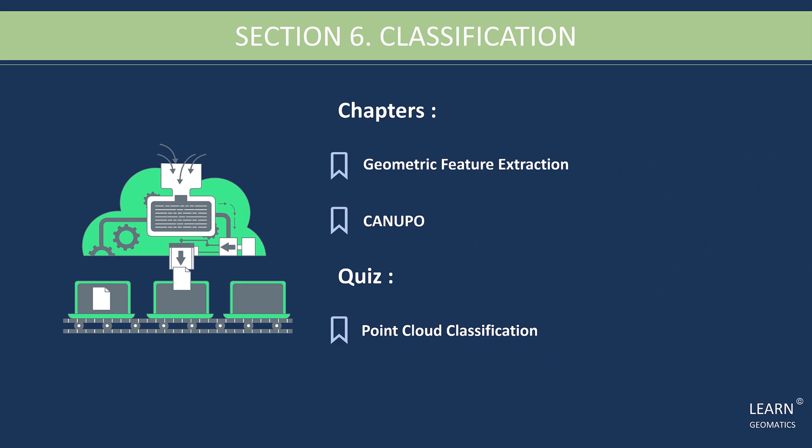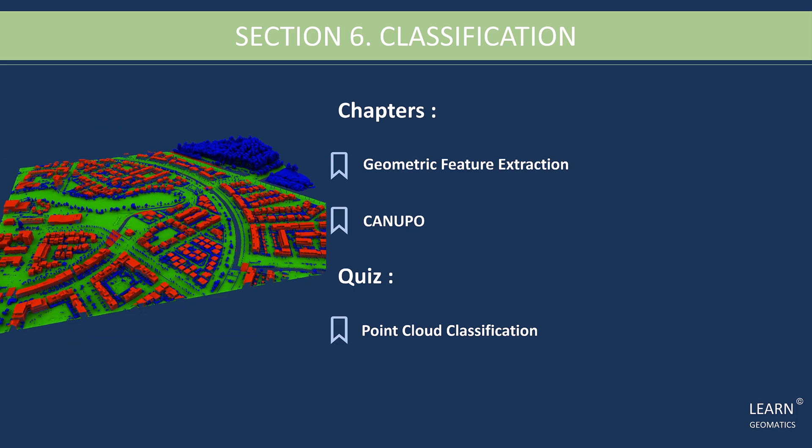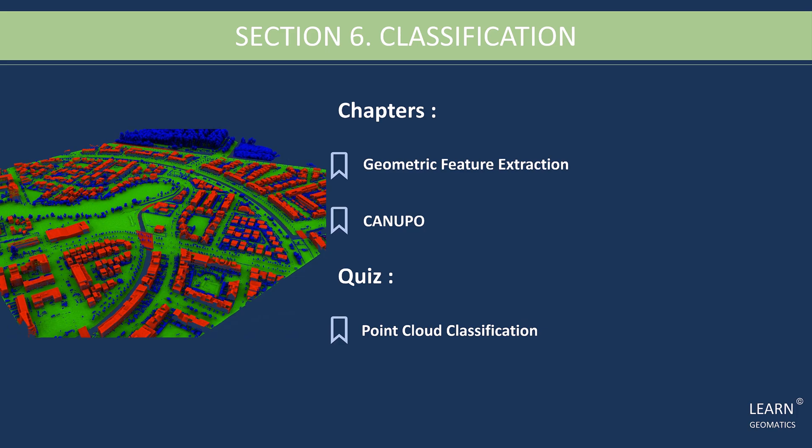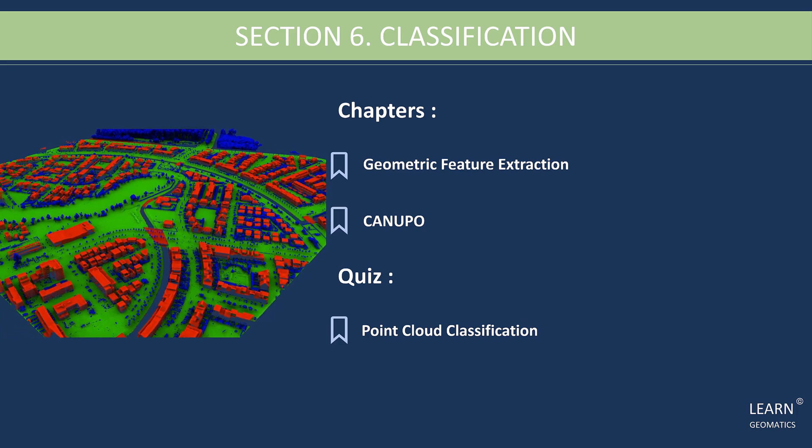Moving on to section six, which is all about classification. In this section, we will cover how to create geometric features and use the Kanupo plugin for binary classifications in Cloud Compare. We will also discuss some of the key techniques used in Point Cloud classification. By the end of this section, you'll have a solid understanding of the classification process and be able to apply it to your own Point Cloud data. And of course, we will wrap up this section with a quiz to test your knowledge of 3D Point Cloud classification.